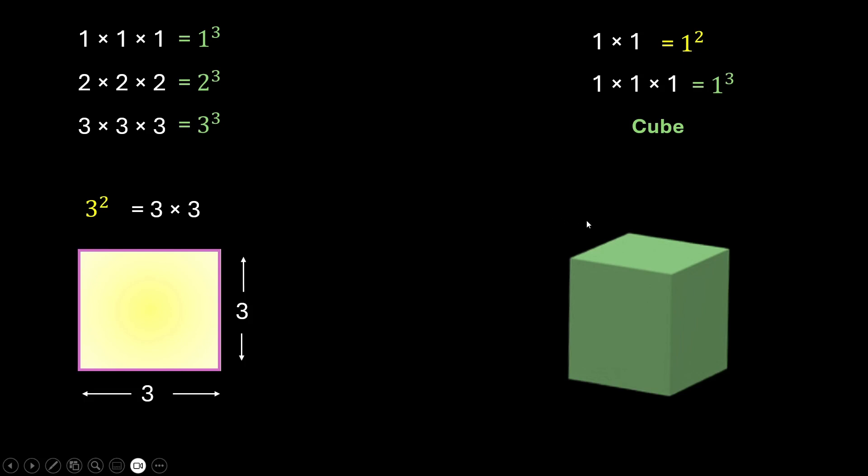Similarly, cube of a number is equal to the volume of the cube whose side is equal to that number. Now volume of a cube is side into side into side, and that's what we're doing here. Cube of a number is that number multiplied to itself 3 times. Here's the term cube.